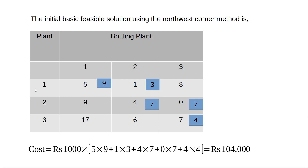This solution says we need to supply 9 kilolitres from plant one to bottling plant one, 3 kilolitres from plant one to bottling plant two, 7 kilolitres from plant two to bottling plant two, 7 kilolitres from plant two to bottling plant three, and 4 kilolitres from plant three to bottling plant three. The cost of this entire operation is 5×9 + 1×3 + 4×7 + 0×7 + 7×4, which equals 104,000 rupees.